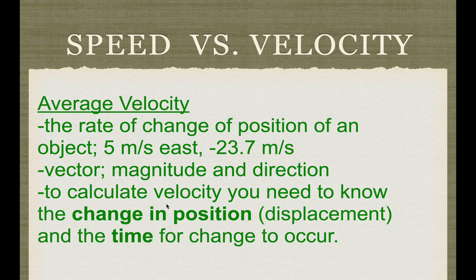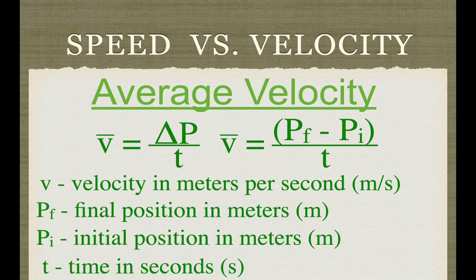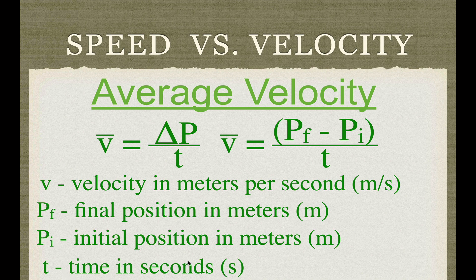To calculate velocity, you need to know the change in position — which is the displacement — and the time it took for that change to occur. Average velocity is simply change in position over time. Please remember: the change in position is always final minus initial. It's position final minus position initial, not the other way around — always final minus initial divided by the time. V is velocity in meters per second, PF is position final, and positions are given in meters; time is in seconds.